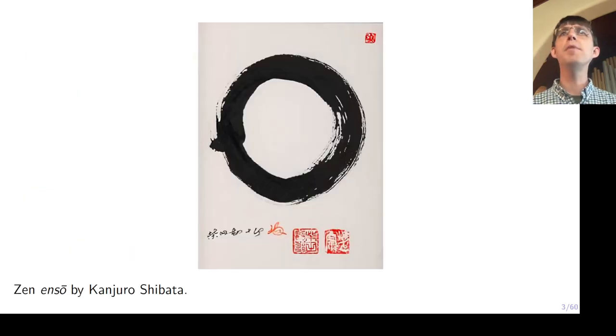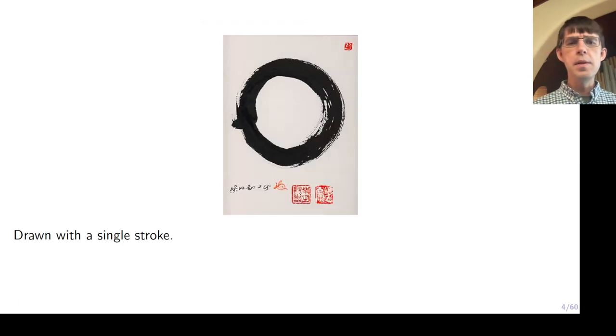But I wanted to share with you some examples of beautiful simplicity in different kinds of art. I think that a good artist can create deep beauty from simple things. So here's an example of that. Like I said, I'm not an expert in art by any means, but this is what they call an enso. This is from the Zen Buddhist tradition, and it's a circle, right?